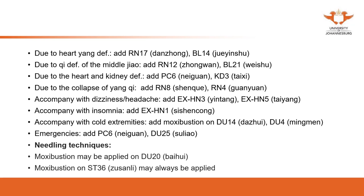For Qi deficiency of the middle Jiao, you can use Ren 12, BL21, ST36, and Pericardium 6. As you can see, some of these are back-shu points and some are Yuan source points of specific organs. For collapse of Yang Qi, use Ren 8 and Ren 4 — Ren 8 with moxibustion, and Ren 4 with a combination of moxibustion and acupuncture.